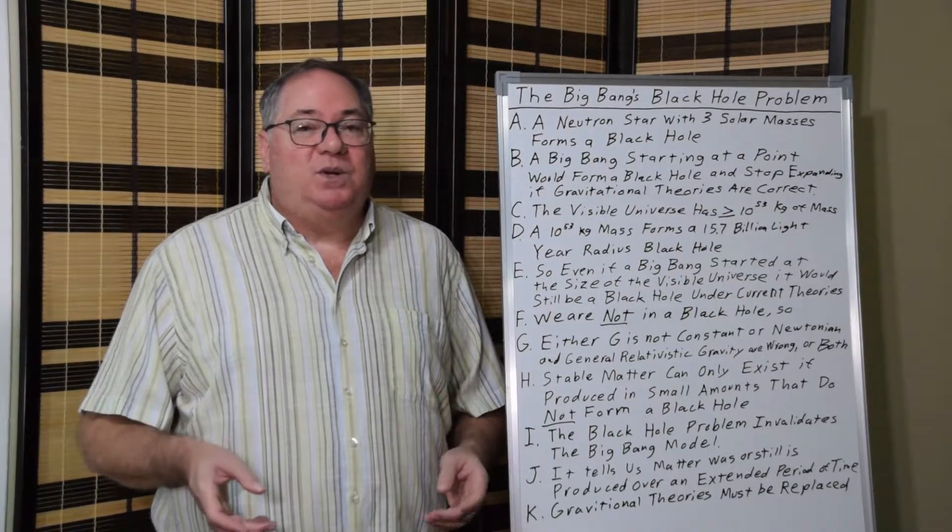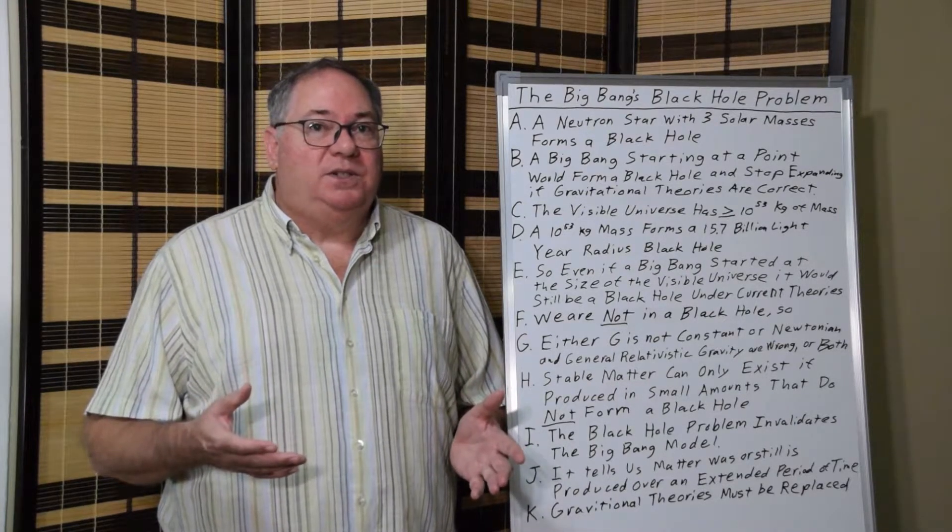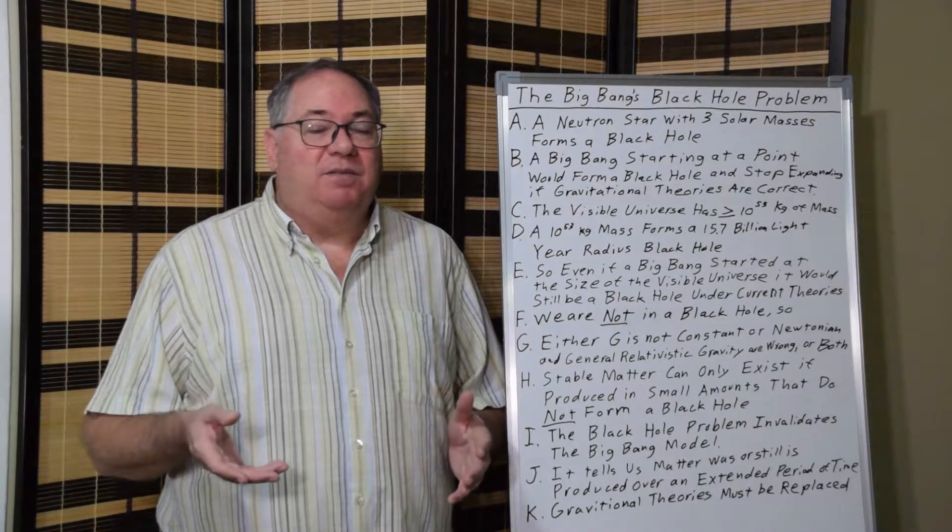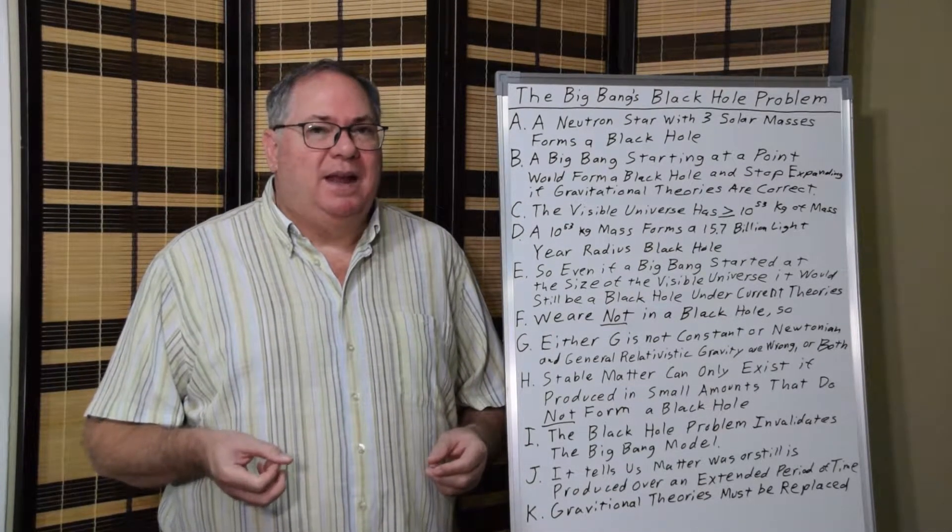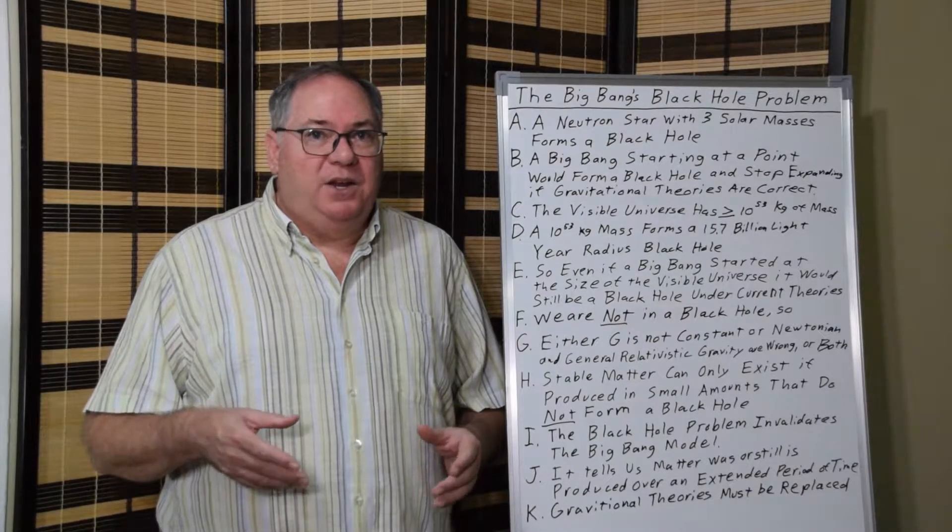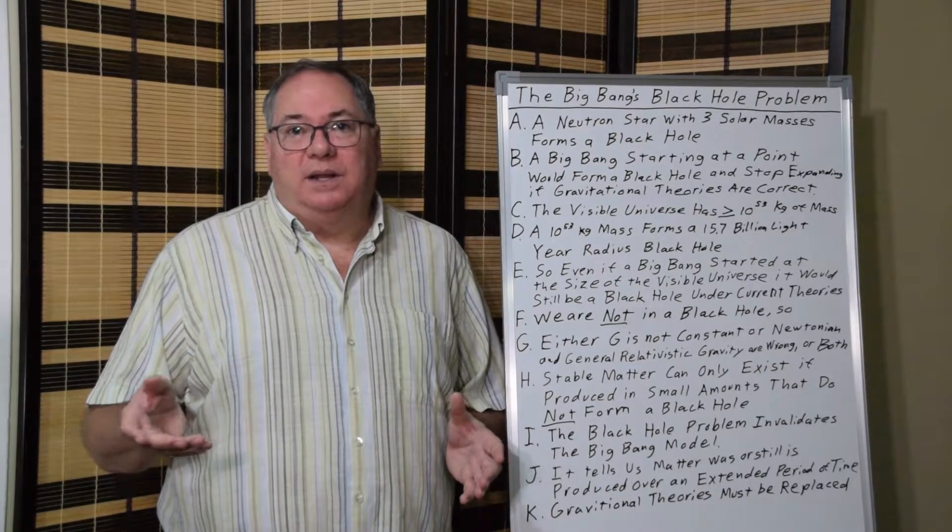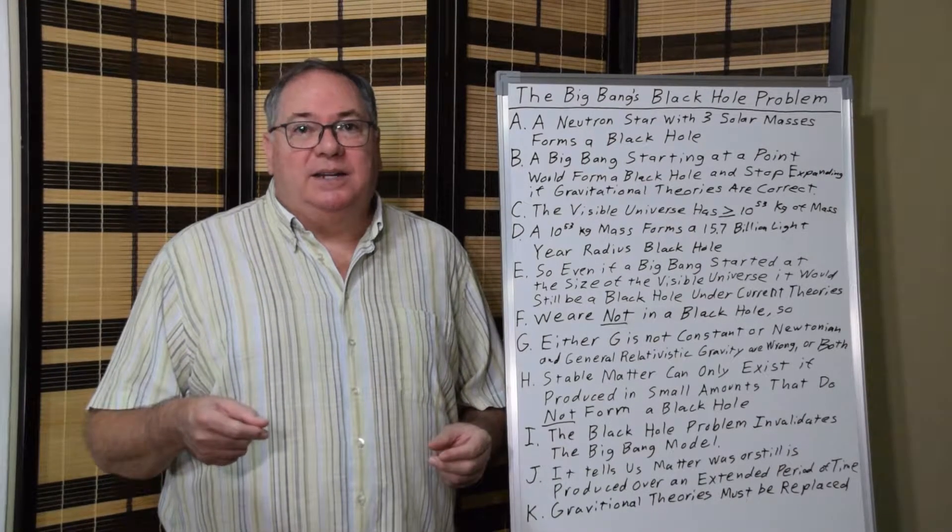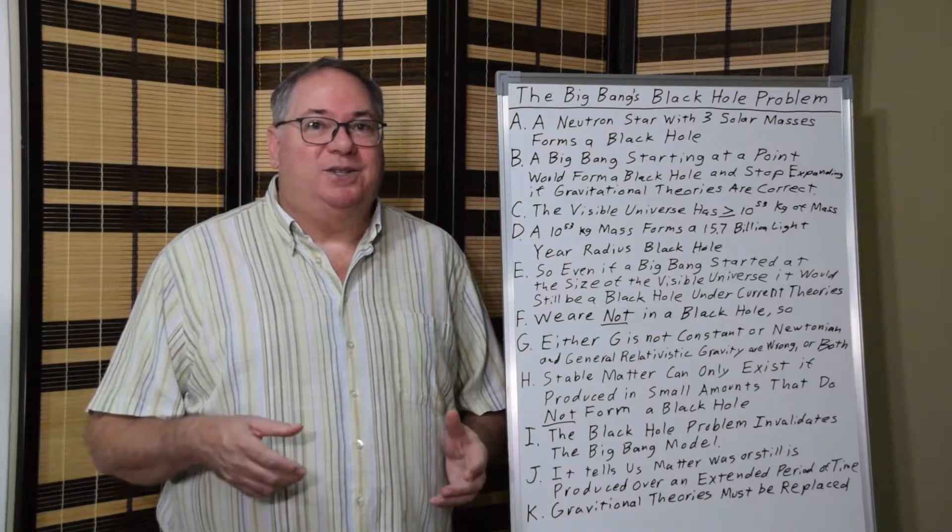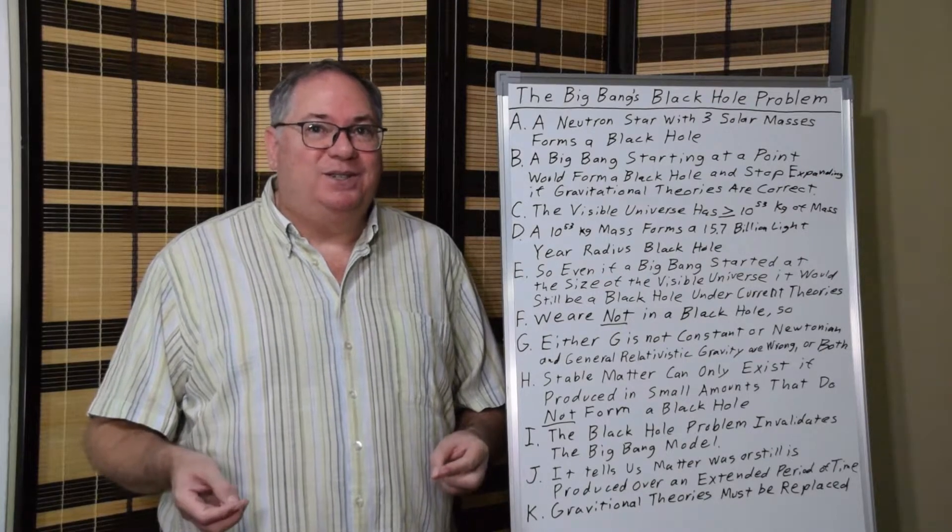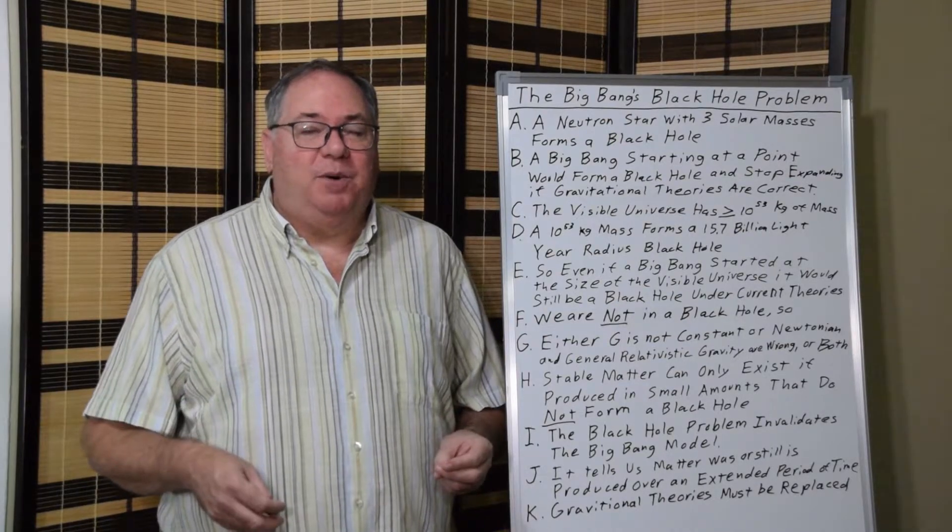And the problem is even worse than that, because if you take estimates of the total matter in the universe, the total mass of the universe is estimated to be 10 to the 53 kilograms. And that may be low, but using that number, that amount of mass would produce a black hole with a radius of 15.7 billion light years, which is slightly larger than the size of the visible universe as defined under the Big Bang at approximately 13.8 billion light years.